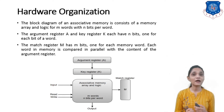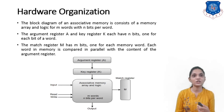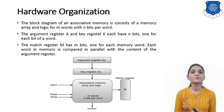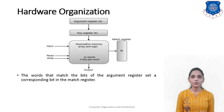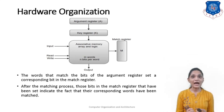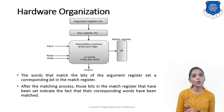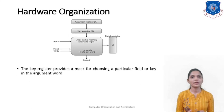The word that matches the bits of the argument register sets a corresponding bit in the match register. After the matching process, those bits in the match register that have been set indicate that the corresponding words have been matched. Reading is accomplished by sequential access to memory for those words whose corresponding bits in the match register have been set. The key register provides a mask for choosing a particular field or key in the argument to compare.